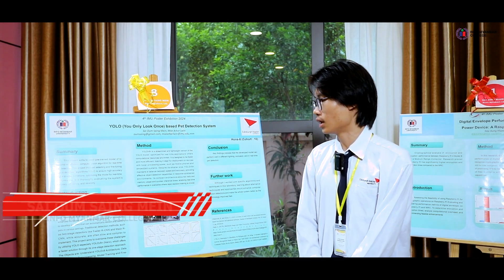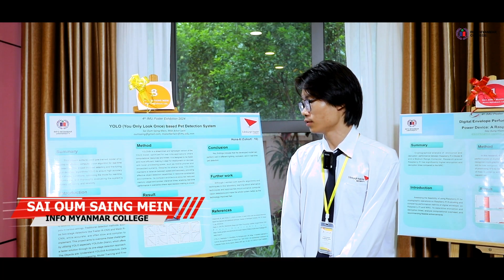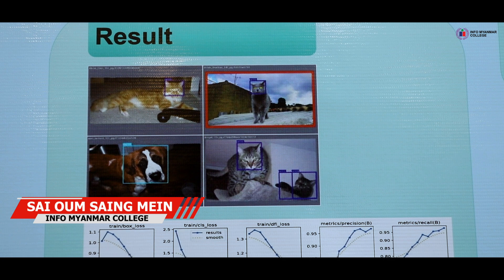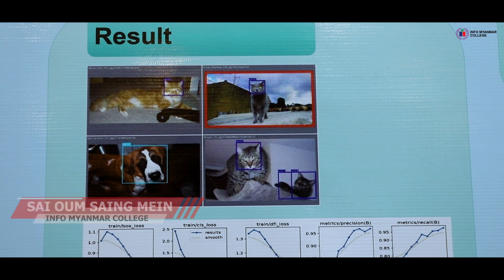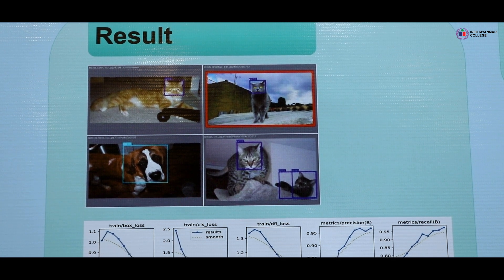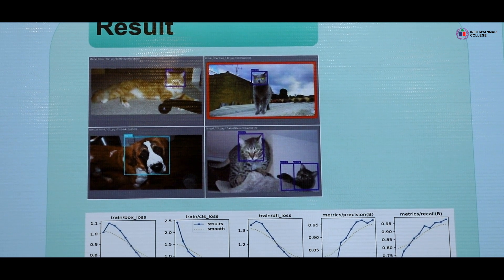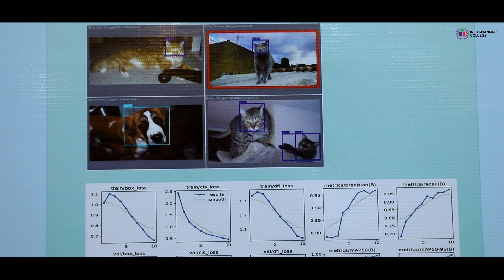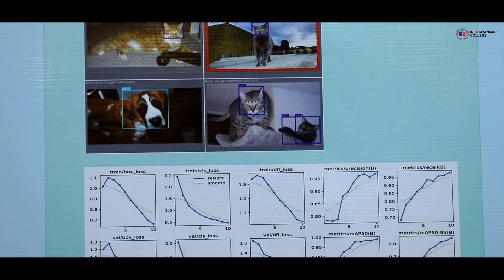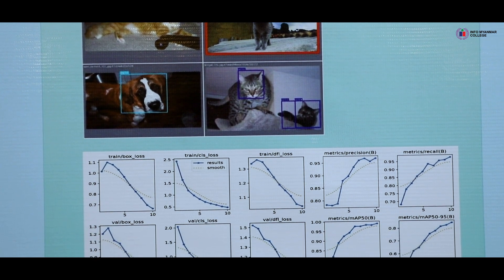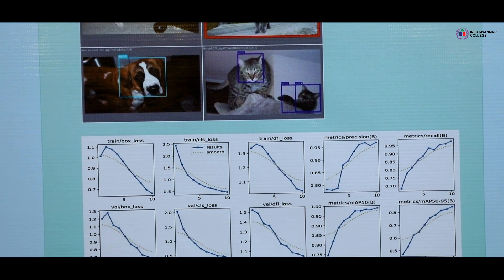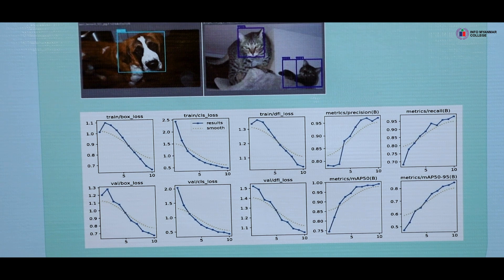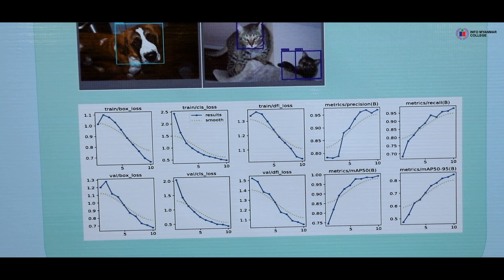These are my results using YOLOv8N. It shows the results for cat and dog detection. I'm using a confusion matrix to evaluate my results, which shows very high accuracy and robustness to position variation in the image.